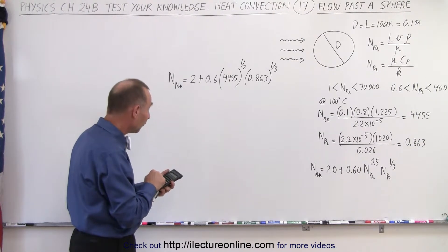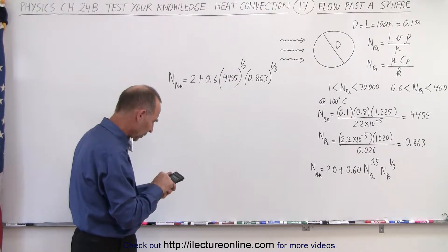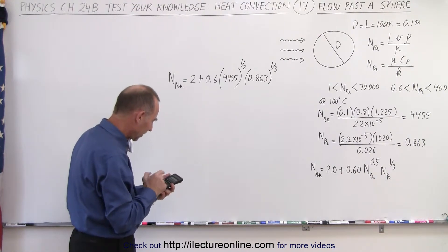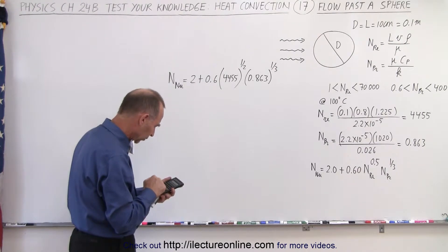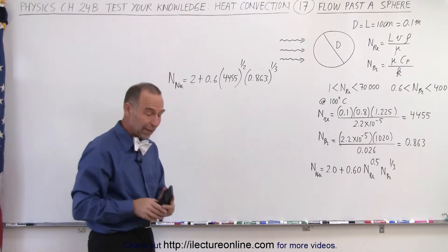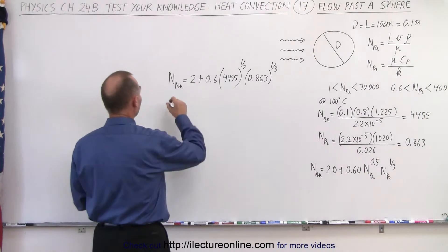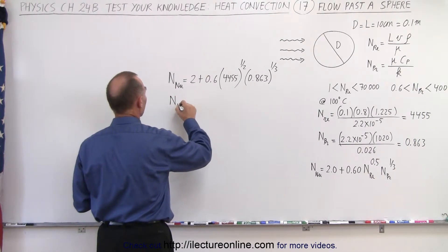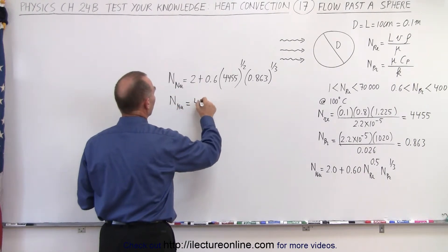Now we multiply that times 4455 raised to the 0.5 power. We multiply that times 0.6 and then we add two to that, and we get 40.1. So we have a Nusselt number equal to 40.1.